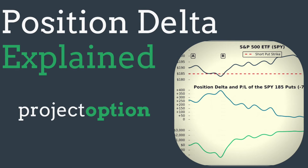If you're familiar with an option's delta, an option's delta tells you how much that option's price is expected to change relative to changes in the stock price. The only problem is you need to know how much you're going to make or lose when the stock price changes. So position delta tells you the profits or losses you can expect relative to $1 changes in the underlying stock.